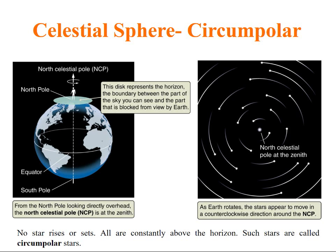The celestial sphere is circumpolar at the north pole. At the north pole, no stars rise or set. All are constantly above the horizon. Such stars are called circumpolar stars. The word circumpolar is referred to all those stars when viewed from north pole. When we observe the stars from any other point, then the stars appear to move in counterclockwise direction, as shown in the figure.